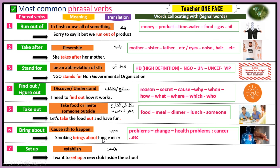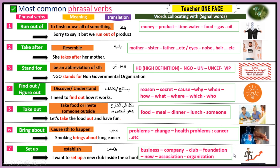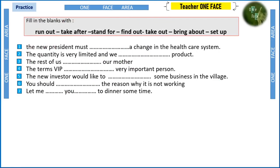Number seven, we have 'set up,' which means to establish something. For example: establishing a new club inside a school. We usually set up a business, a company, a club, or a foundation. Keywords that go hand in hand with set up include business, association, organization, and 'new.'